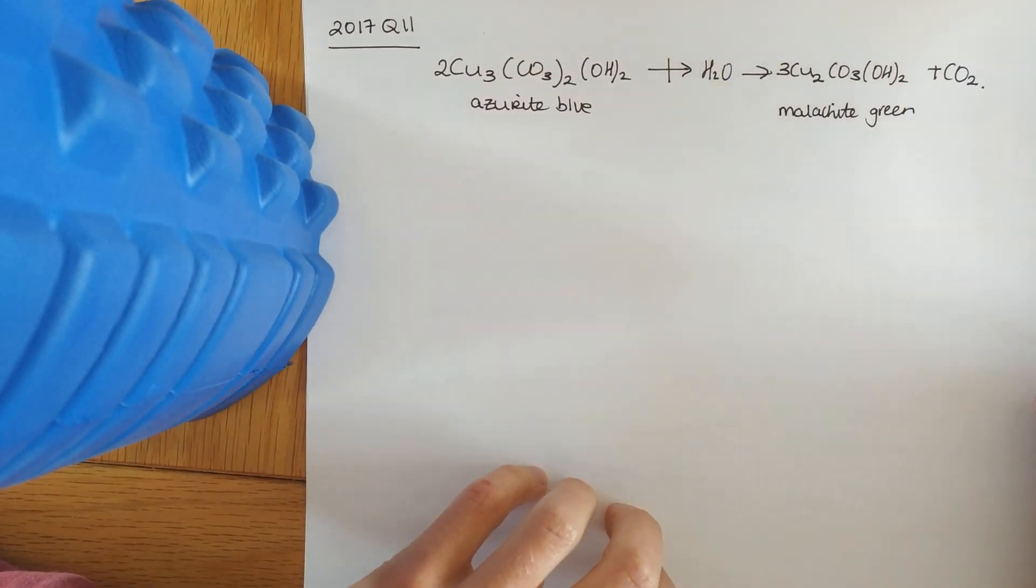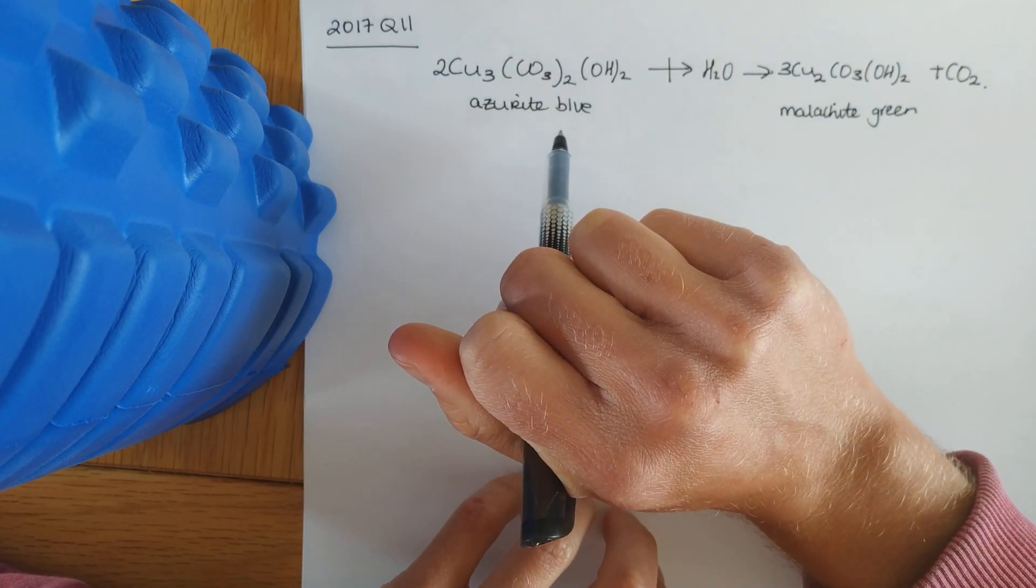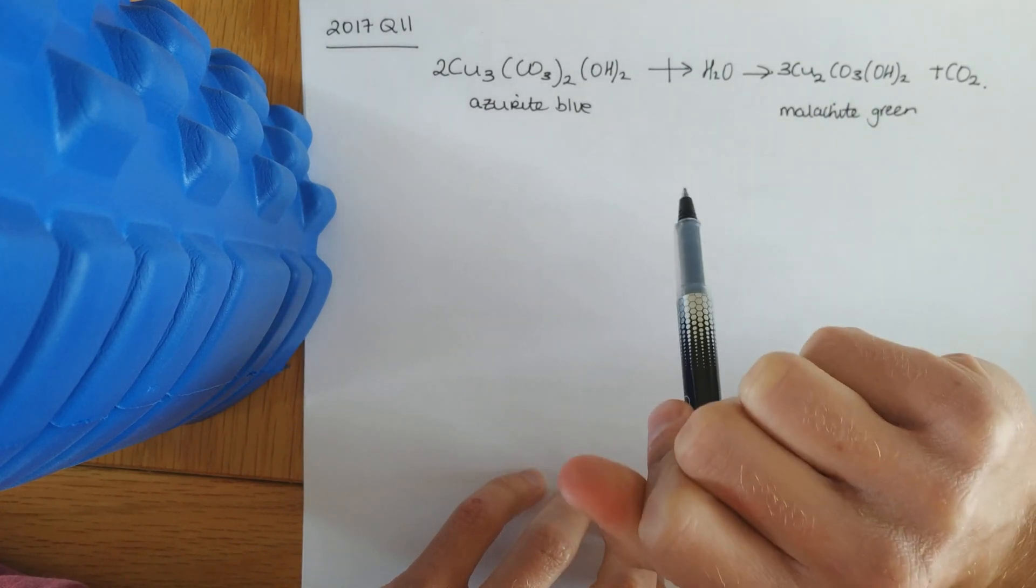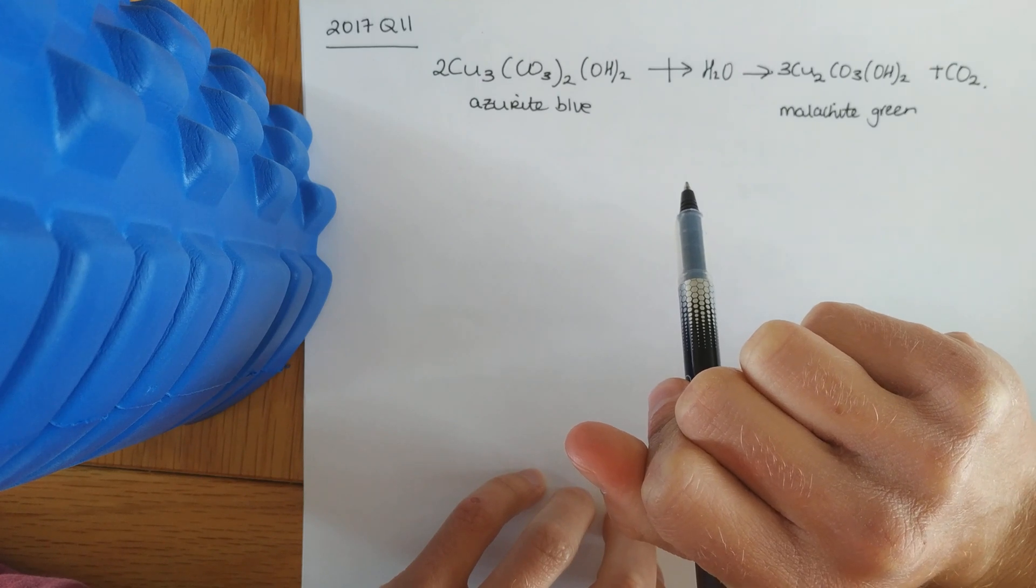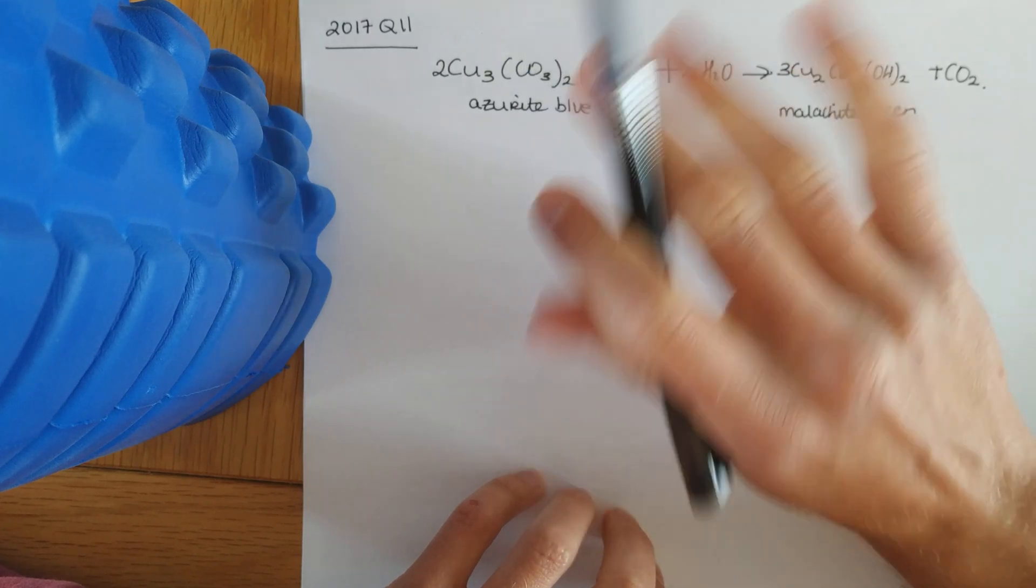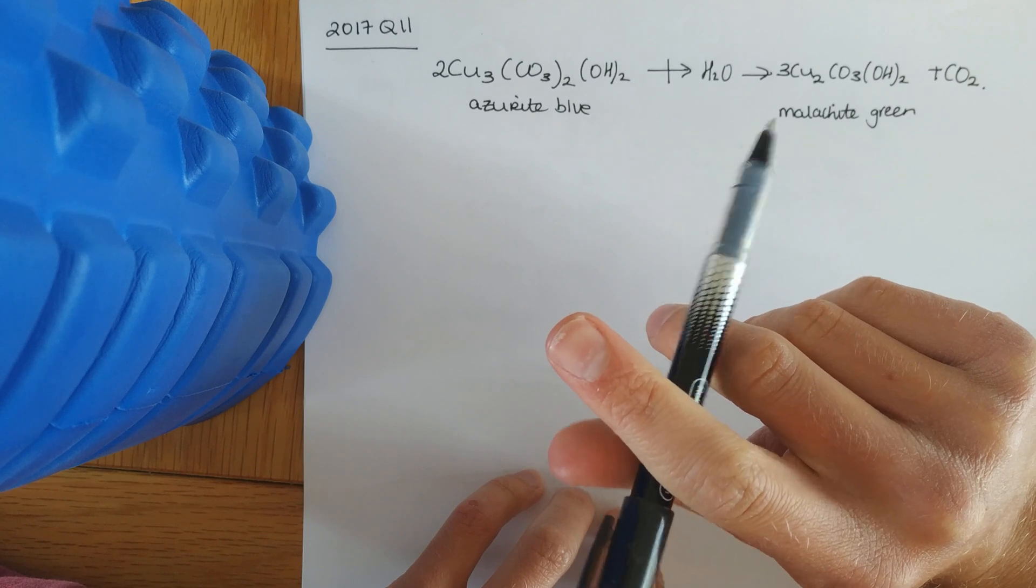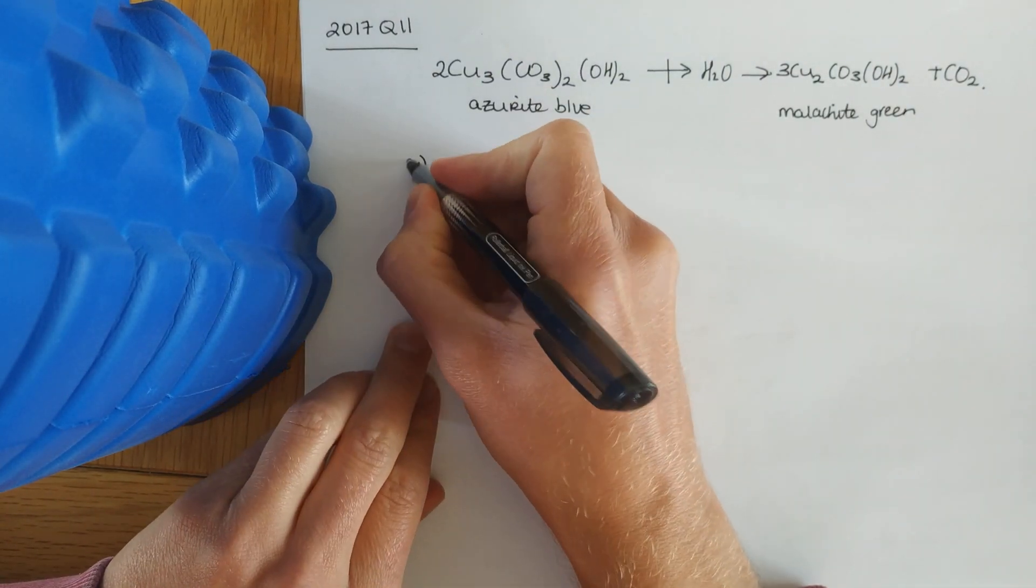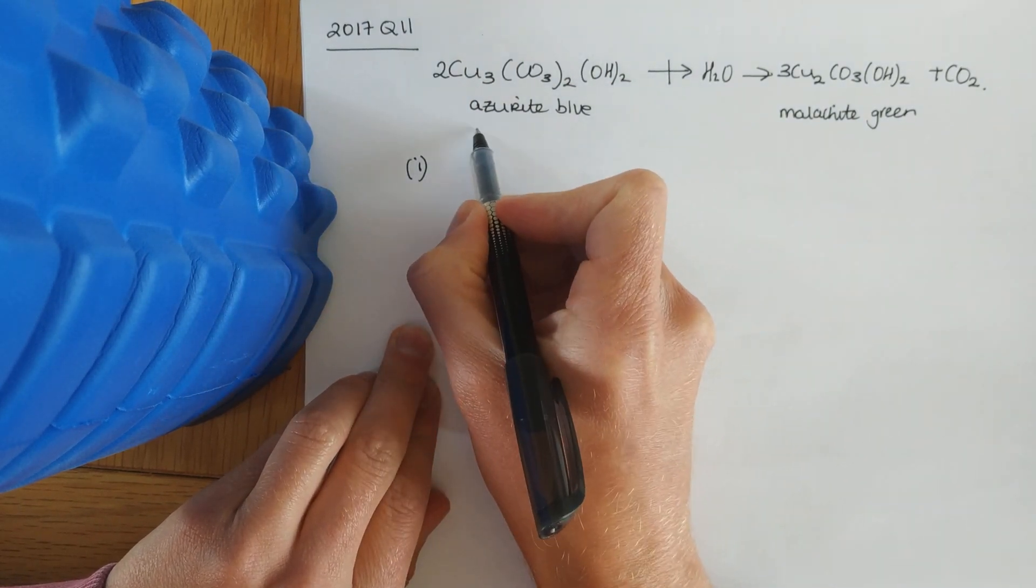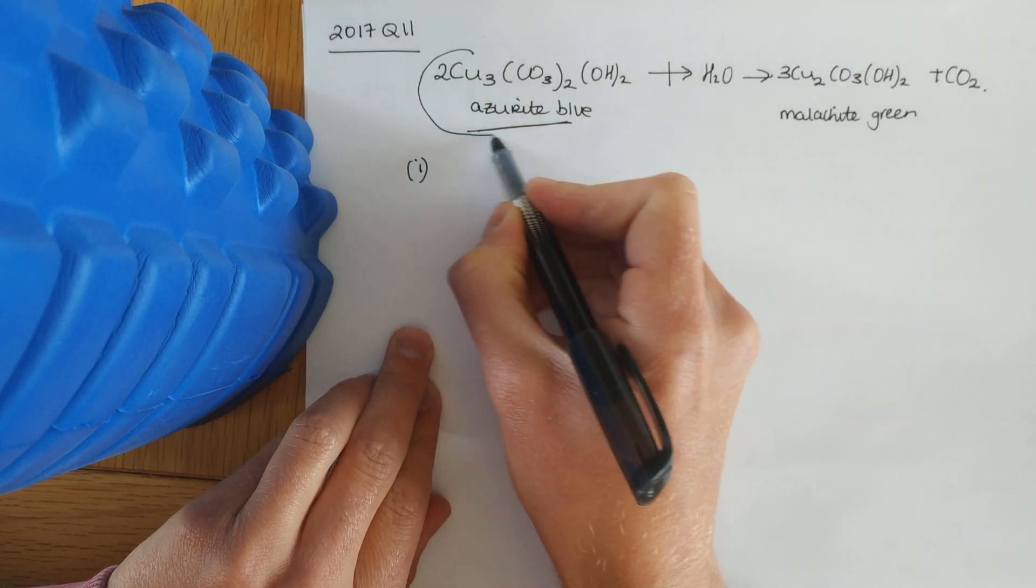So, if you read it for yourselves, 11a. Some of the blue pigment azurite was used by an artist in a picture painted and has changed over the years into this. So, the blue has changed to green according to the balanced equation. And that shows that the only copper containing pigments in the painting are azurite and malachite, and the picture now contains 3.81 grams of copper. So, they've asked you in the first bit. This is where it's tough. What mass of pure azurite contains 3.81 grams of copper?